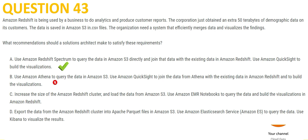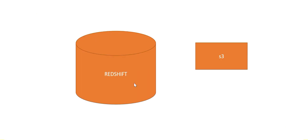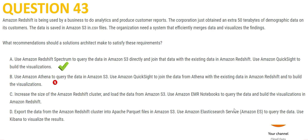Option C suggests increasing the Redshift cluster size and migrating data from S3 into Redshift, then building visualization. You never use Redshift to build visualizations — there are separate tools like QuickSight or external tools like Tableau. Also, you already have Spectrum available, so doing data migration is inefficient. The statement about building visualization in Redshift is wrong, so C is totally wrong.